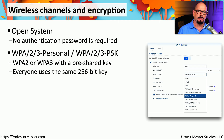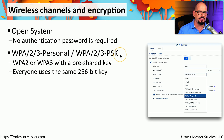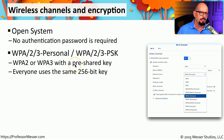A more secure network might provide encryption and require you to provide additional credentials to connect. You can do this using WPA2 or WPA3 for your encryption, and there is a method called a Personal or PSK configuration. This is the type of configuration you often see in a home office because the PSK is a pre-shared key — effectively a password that you give out to everyone who wants to access the wireless network.